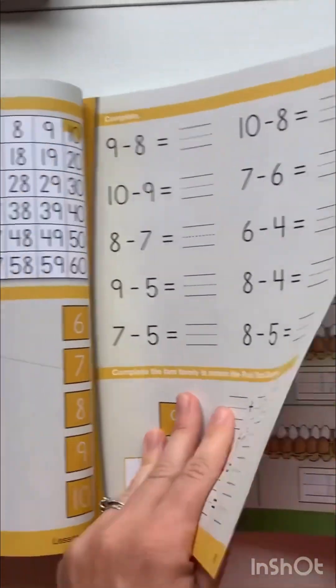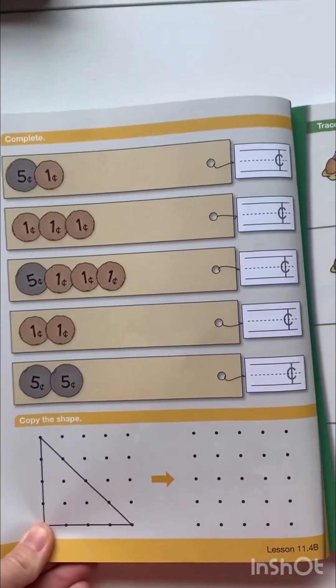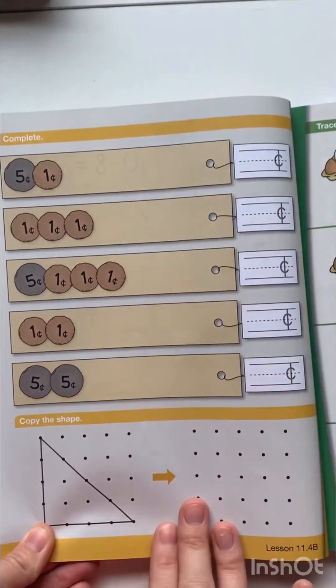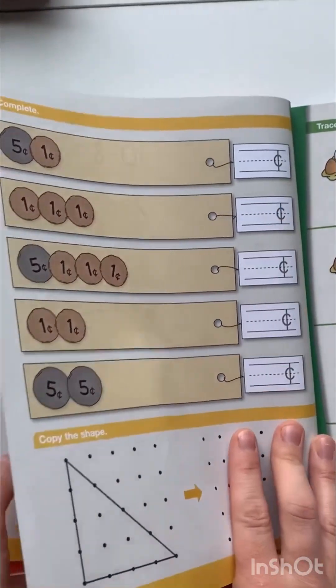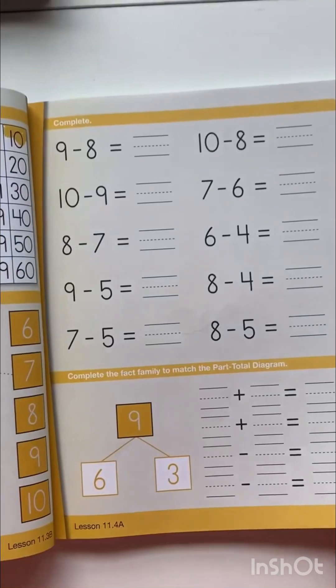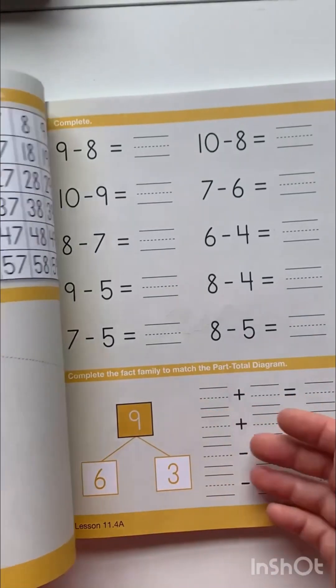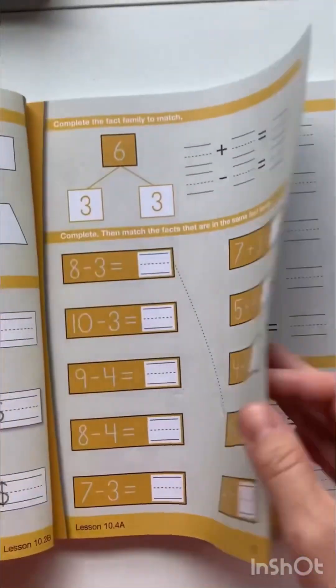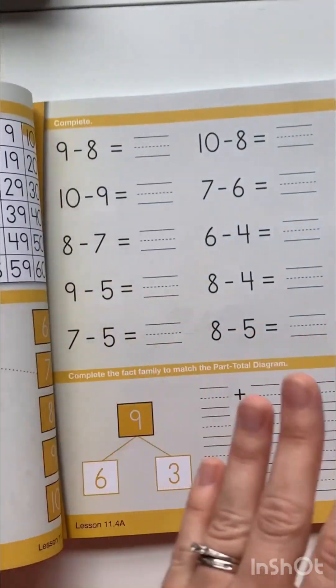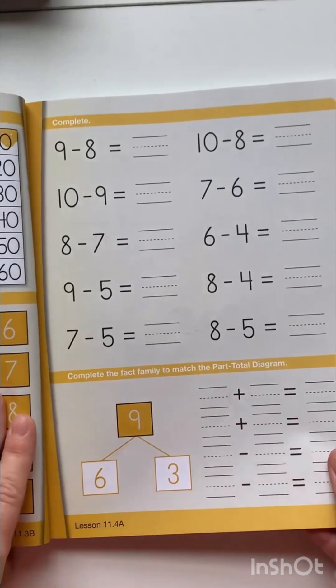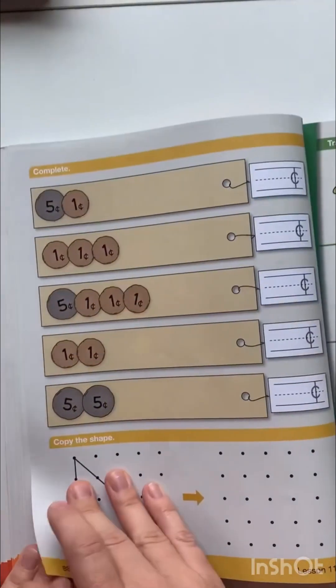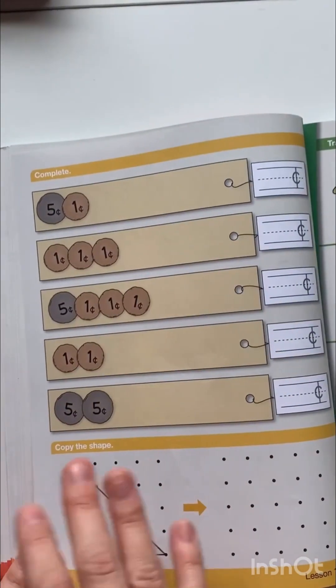Then on the back side is review. So this is stuff that your child has already practiced before. So this book is actually a combination of mastery and I guess maybe spiral because it is grouped. For example, this is the subtraction chapter. So you're learning subtraction each day for a certain number of weeks. But each day you're also doing a couple of review problems on the back.